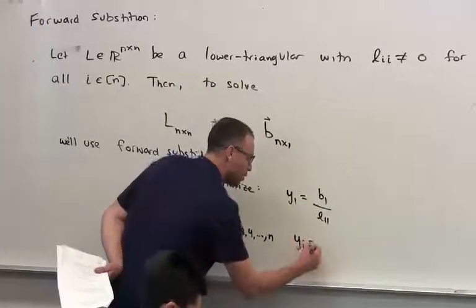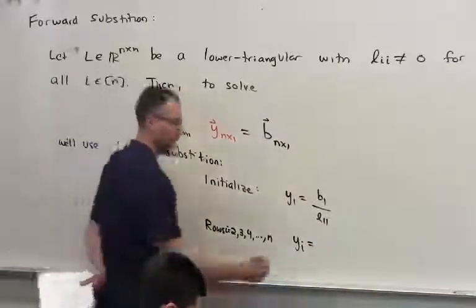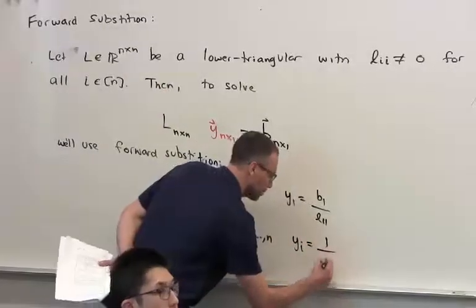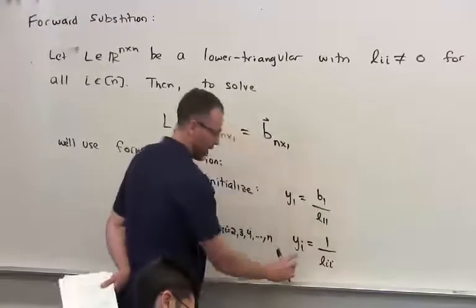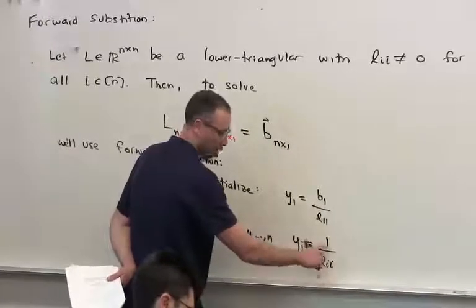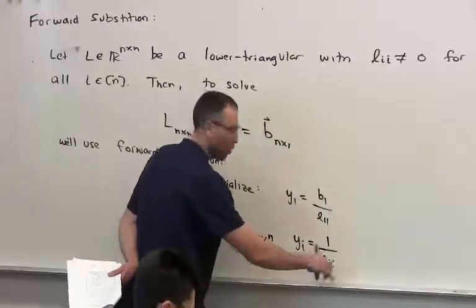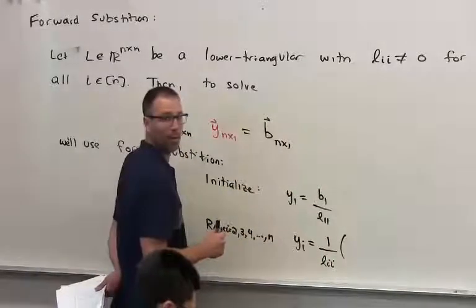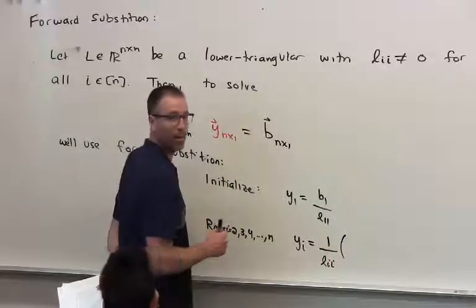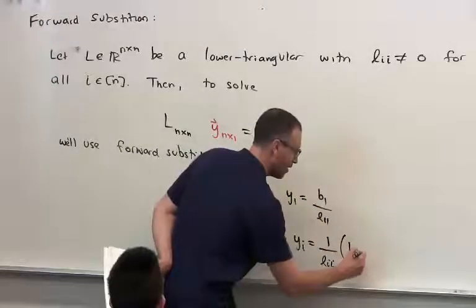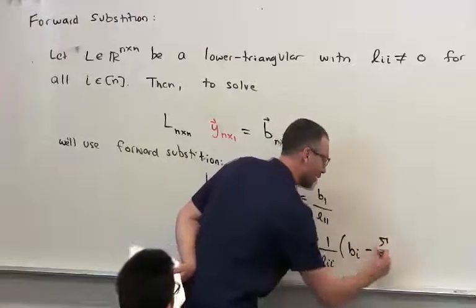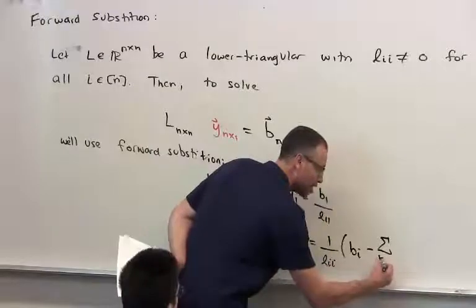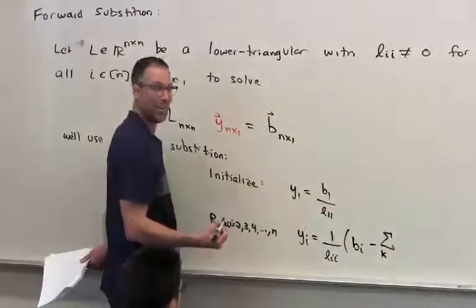So if I wanted to get the Ith entry of this thing, can you guess what that is? Well, the Ith entry is going to be the 1 over the diagonal entry in that row. And what about the sum? B-I minus, in this case it's a different sum.